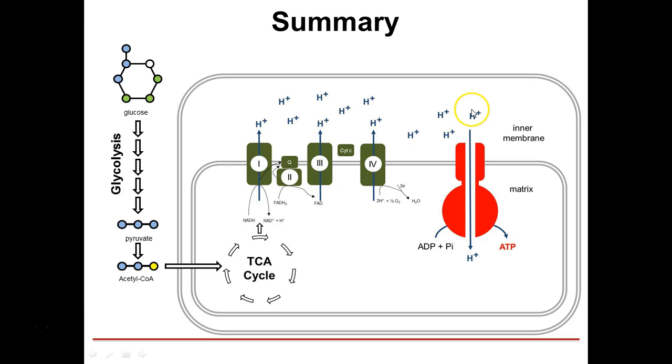We need to set up our proton gradient. To set up our proton gradient, we use the electron transport chain, with complexes 1 through 4 being responsible for pumping those protons into the inner membrane space. The energy they need to do this comes from the oxidation of NADH and FADH. Those NADH and FADH electron carriers are generated from the TCA cycle. We feed the TCA cycle, in this instance, by the use of acetyl coenzyme A. We generate our acetyl coenzyme A from pyruvate through the action of pyruvate dehydrogenase. We can generate more pyruvate through the breakdown of glucose.